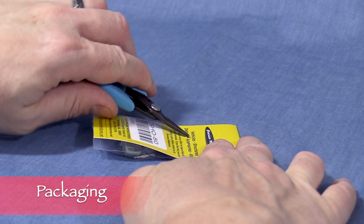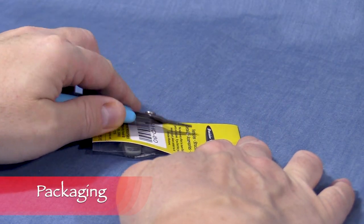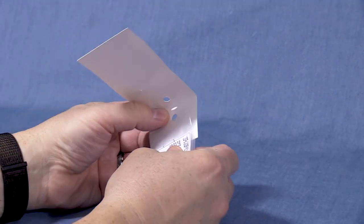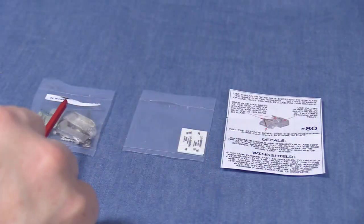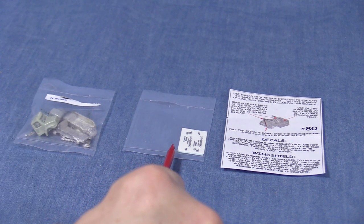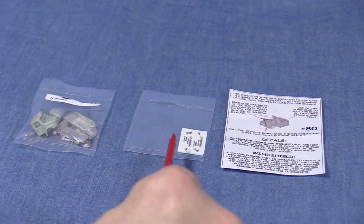To make sure I don't break any delicate parts, I open kits like this by using some pliers to pry the staple on the back. Then I pull the cardboard wrapper apart. The kit includes a bag with the truck parts, a bag with decals, and an instruction sheet.